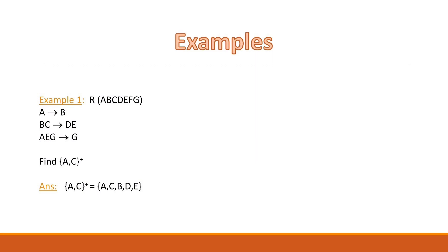The attributes a and c are given, so these two attributes will by default be present in the closure set. Looking at the first functional dependency a→b, since we already have the value of a in our closure set, we can determine b, so b will be included. Now, looking at the second functional dependency bc→de, we already have b and c, so d and e will also get included. No further attributes can be added. So our final closure set of {a, c} will include {a, c, b, d, e}.